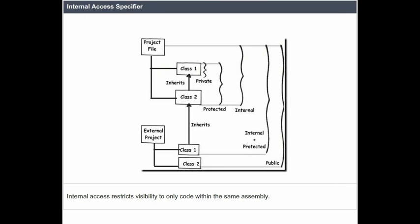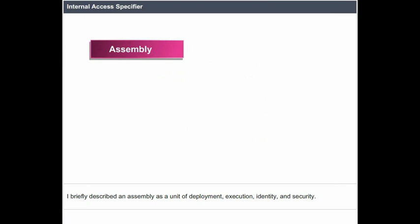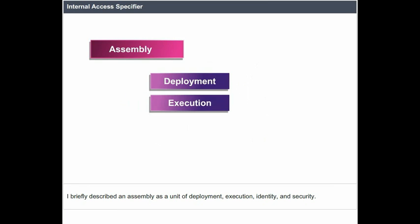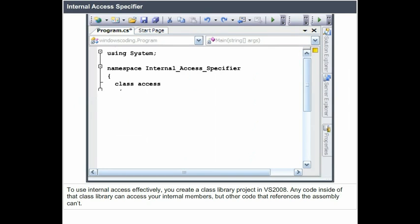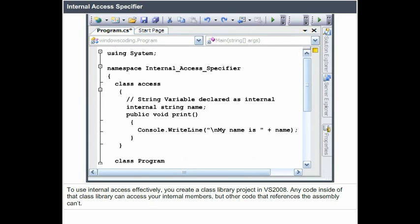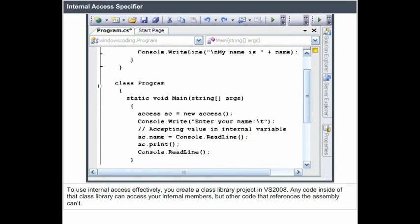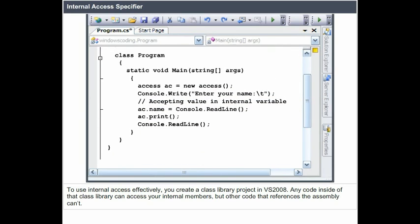The internal access specifier restricts visibility to only code within the same assembly. An assembly is a unit of deployment, execution, identity, and security — and also a unit of containment where you may restrict access via internal modifiers. To use internal access effectively, you create a class library project in Visual Studio 2008. Any code inside of that class library can access your internal members, but other code that references the assembly cannot.